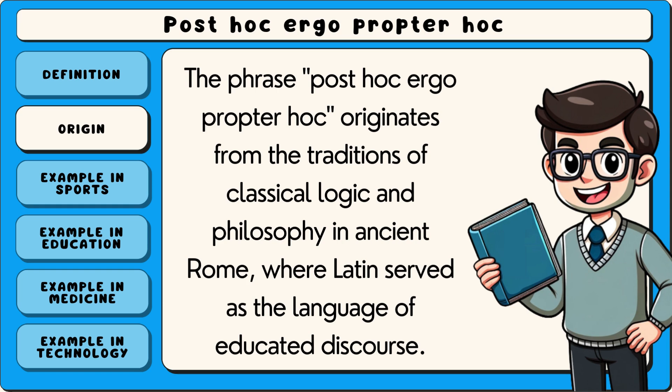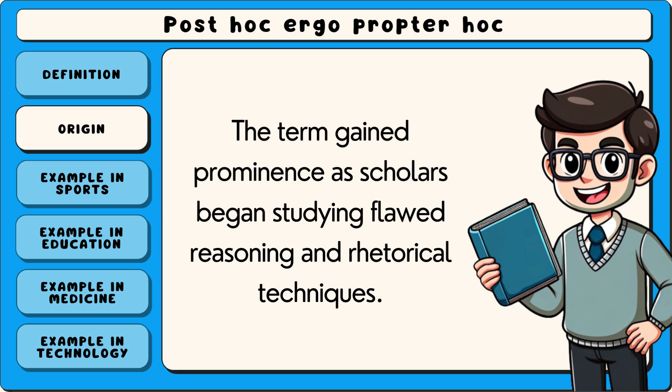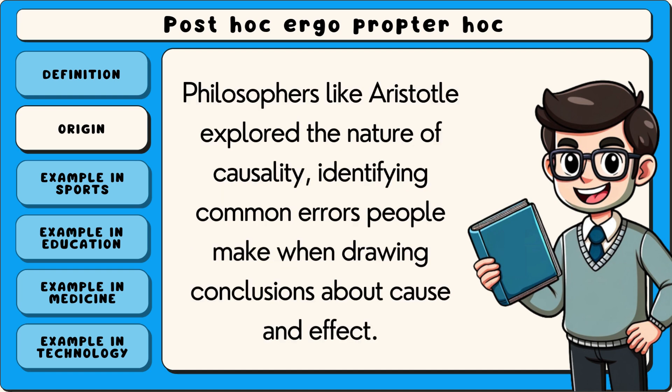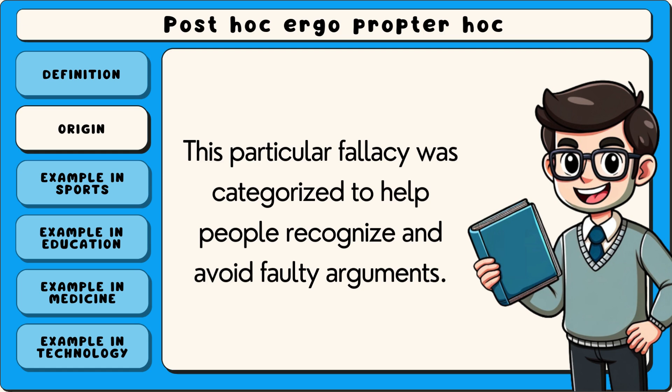The phrase post hoc ergo propter hoc originates from the traditions of classical logic and philosophy in ancient Rome, where Latin served as the language of educated discourse. The term gained prominence as scholars began studying flawed reasoning and rhetorical techniques. Philosophers like Aristotle explored the nature of causality, identifying common errors people make when drawing conclusions about cause and effect. This particular fallacy was categorised to help people recognise and avoid faulty arguments.